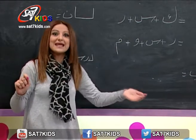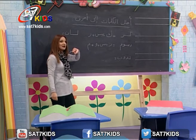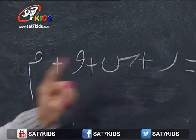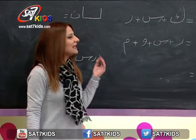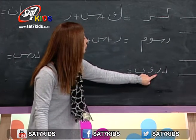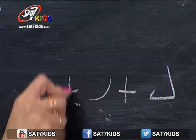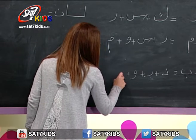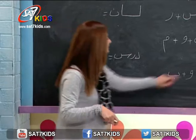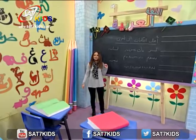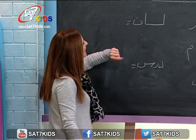بشوف إنه كل كلمة مؤلفة من عدد معين من الأحرف يختلف عن الكلمة التانية. مثلا بكلمة كسرة كان عندي ثلاثة أحرف، أما كلمة رسوم معمولة من أربع حروف. تالت كلمة هي دروب: حرف الدال زائد حرف الراء زائد حرف الواو زائد حرف الباء. وصار عندي كلمة دروب مؤلفة من أربع أحرف.